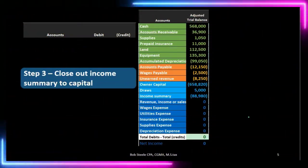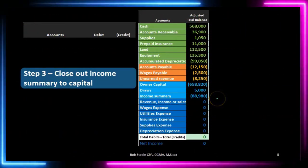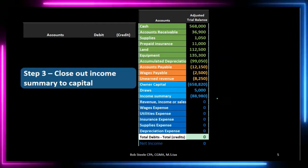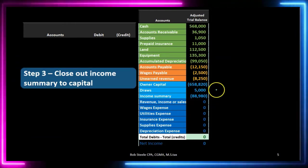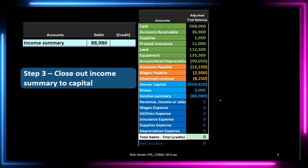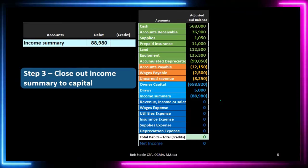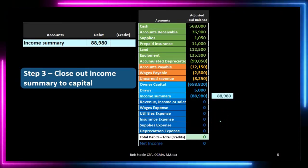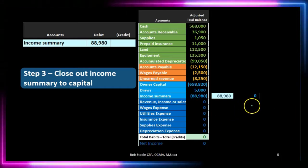The journal entry we now need for step three will close out — make zero — the income summary account and put that balance into the owner's capital account. We look at the income summary and see net income in it. It has a credit balance because it's net income — credits are winning, meaning credits minus debits, revenue minus expenses, gives that credit balance. We need to make it go to zero, so we do the opposite and debit it for whatever's in there: $88,980 in this case. If we post that out, we can see it will then go to zero.